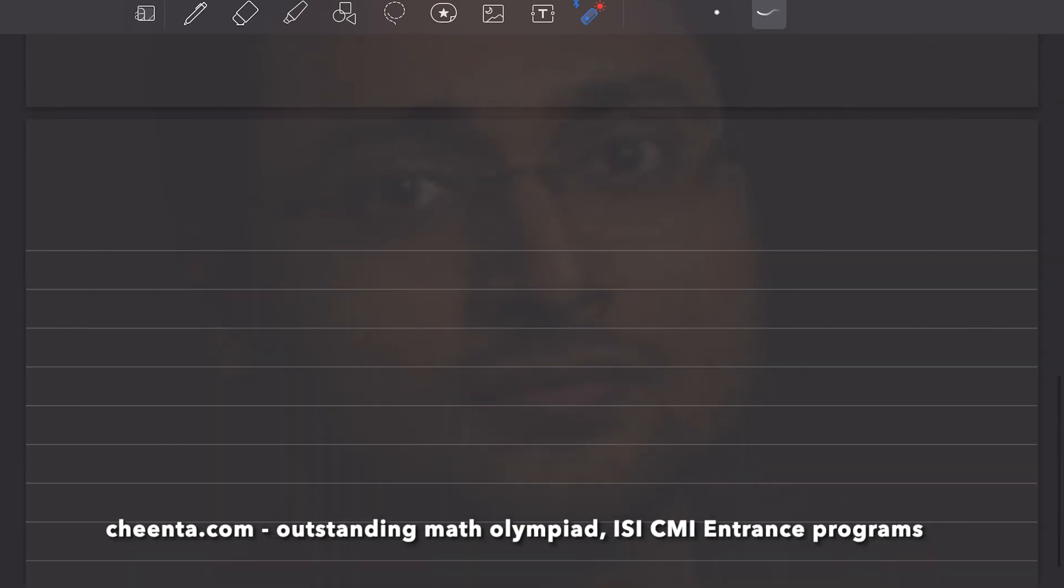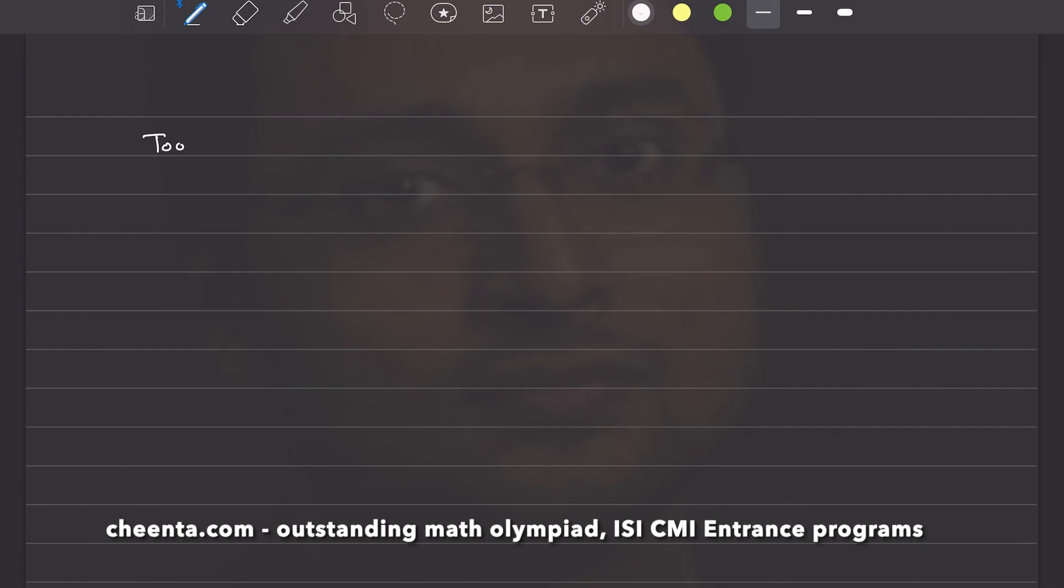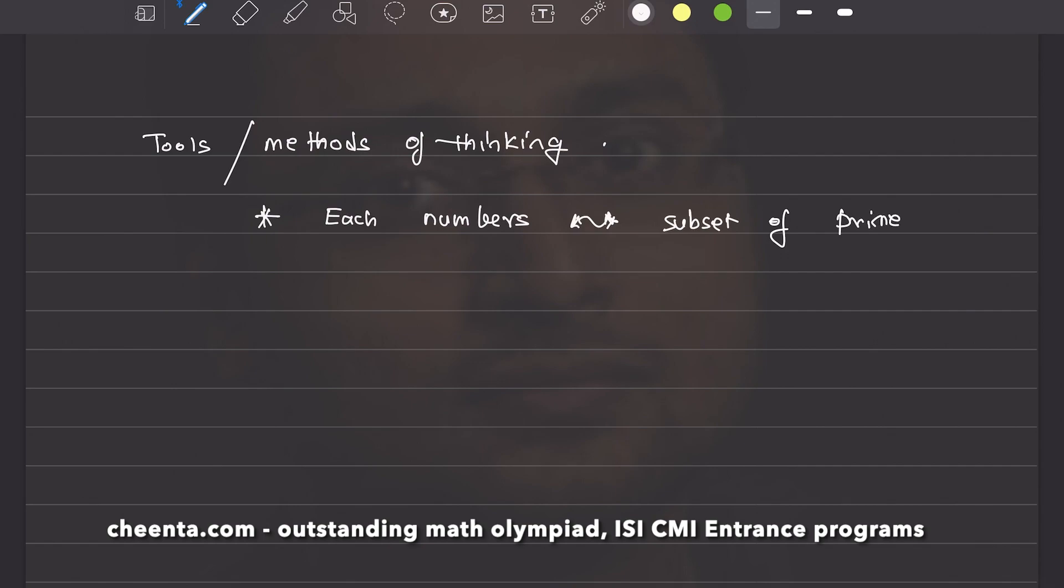So, we have all the tools in place. The tools or the methods of thinking. The first one is, each number is a subset. Think of it as a subset of primes. And remember, twinning to avoid double counting or to make sure a is less than b. This has a wide range of applications in a lot of problems. And the third one is discard one.